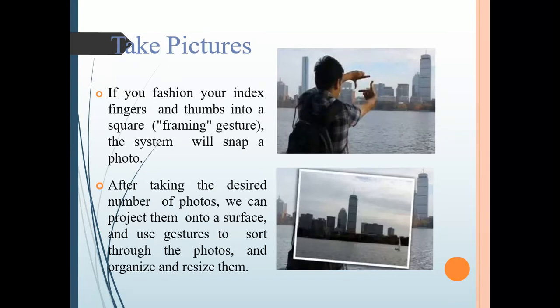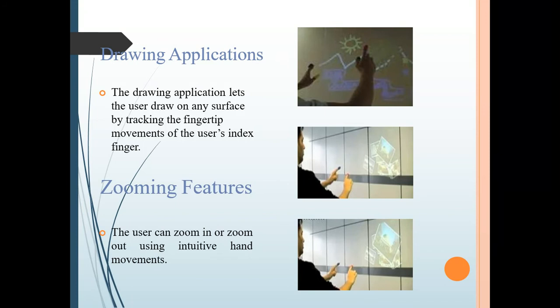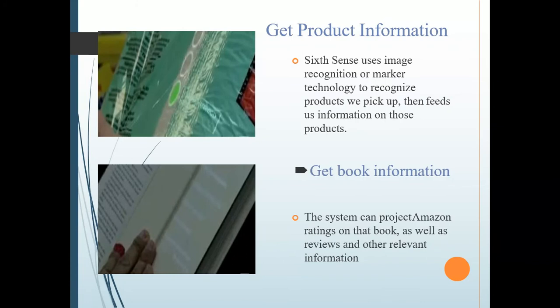Take Pictures: Using index and thumb finger, you can take a snap and resize those photos. Drawing Application: Using fingertip, we can draw and zoom in and zoom out using hand movements. Get Product Information: Sixth Sense uses image recognition or marker technology to recognize products we pick up, then feeds us information on those products.